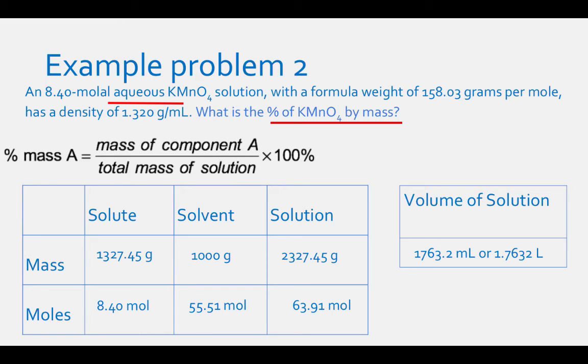The last question for this example asks for percent mass of KMnO₄: divide mass of solute by mass of solution times 100%. 1,327.45 g ÷ 2,327.45 g × 100% = 57.0%.